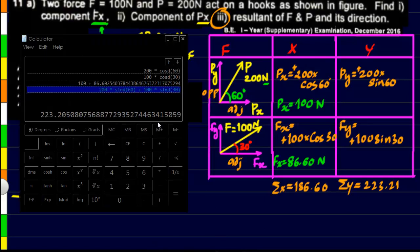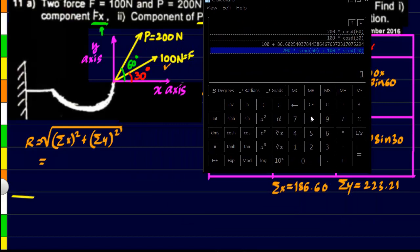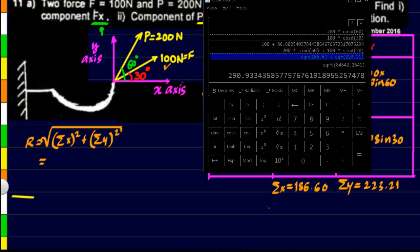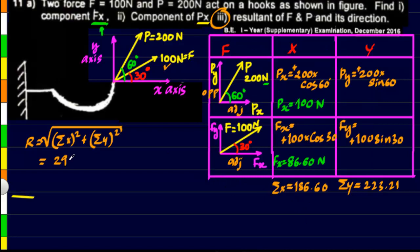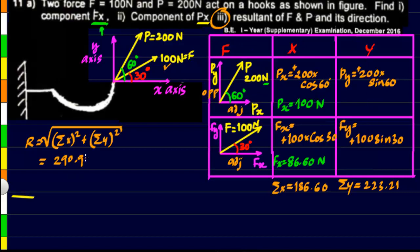So substituting both these values into the calculator we can find it very simply. So it is going to be 186.60 square plus 223.21 again square. The result of this we have to take square root of. So we are getting 290.93, so 290.93 newtons. So this here what we got is the magnitude.